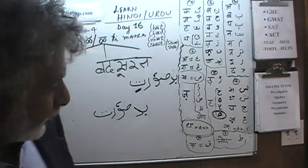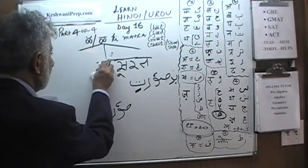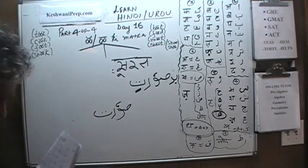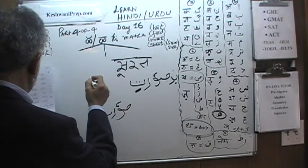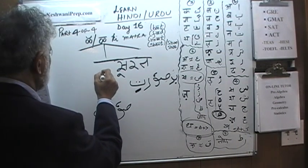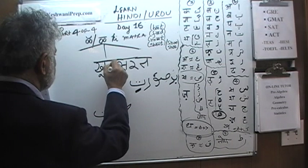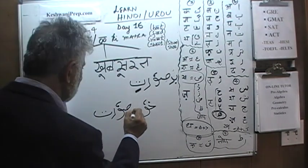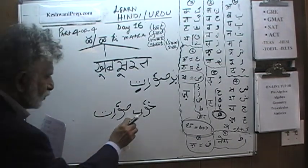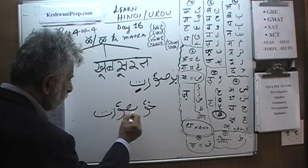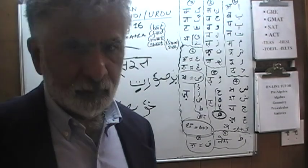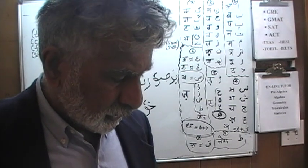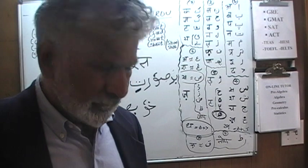Now let's change the prefix from Bad to Khub. Khubsurat — Khub means good or pretty. Khubsurat means pretty or beautiful. The Bu joins the Suad directly. Khubsurat.